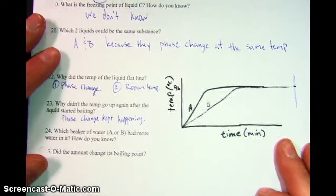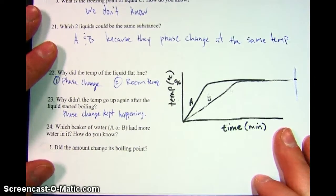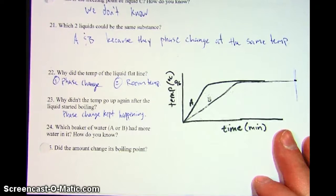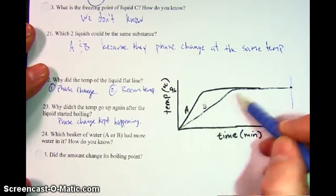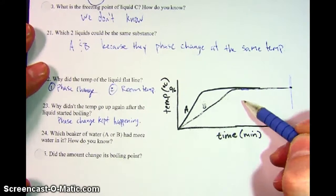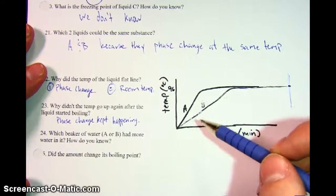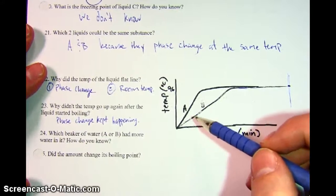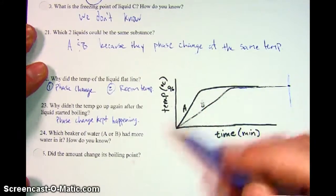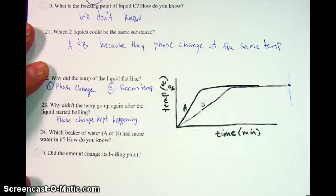Number 24, which beaker of water, A or B, had more water in it? Well, in this graph, they both rise up to the exact same boiling point. We did this during our phases of water lab, or boiling water lab. Basically, you have to think about it like this. If you had two cups of water, or two beakers of water sitting on a hot plate, and one of them was just a little bit, and one of them was a whole bunch of water, which one is going to take longer to boil?